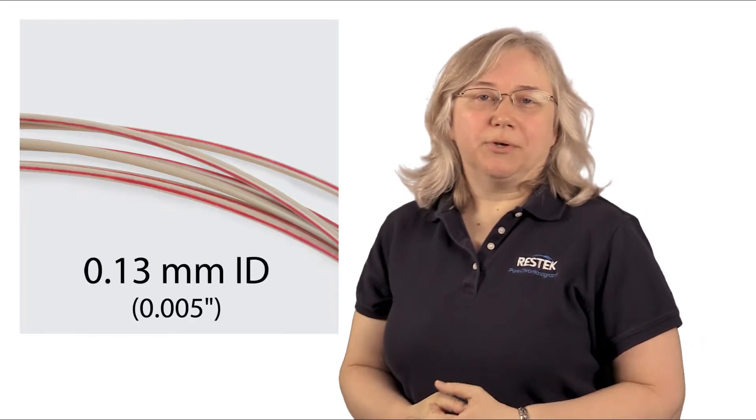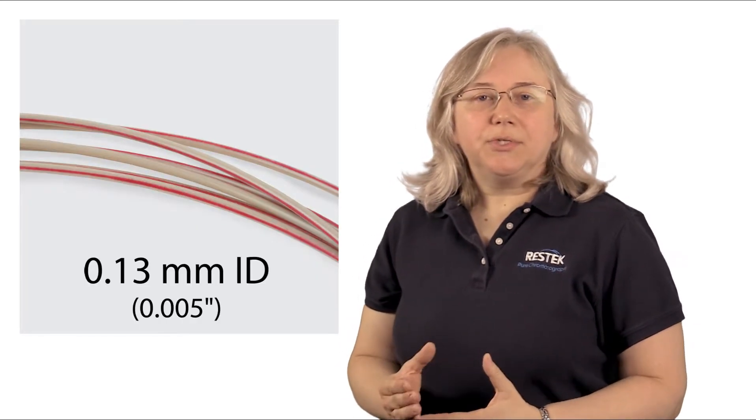Another diameter most commonly used is 0.13mm with a red stripe, and this is used for connections from your column to your detector, and the small ID keeps the peaks in a tight band, so that helps you get a little better signal and a better detection limit.